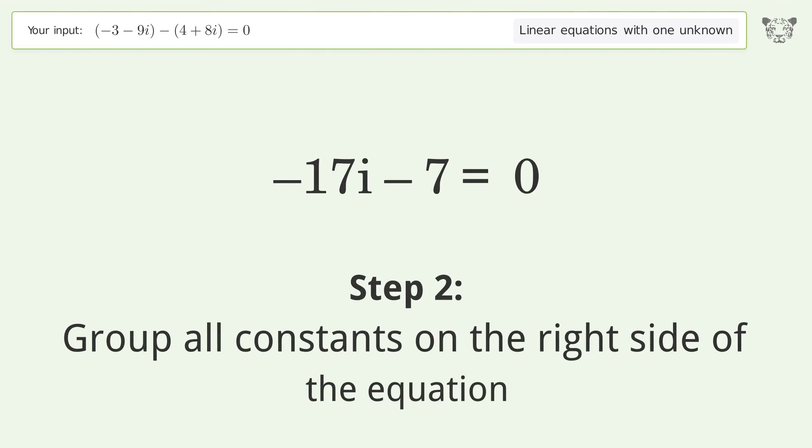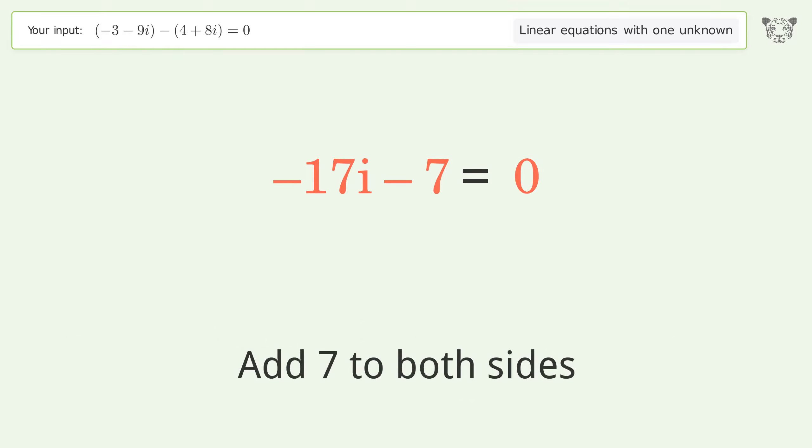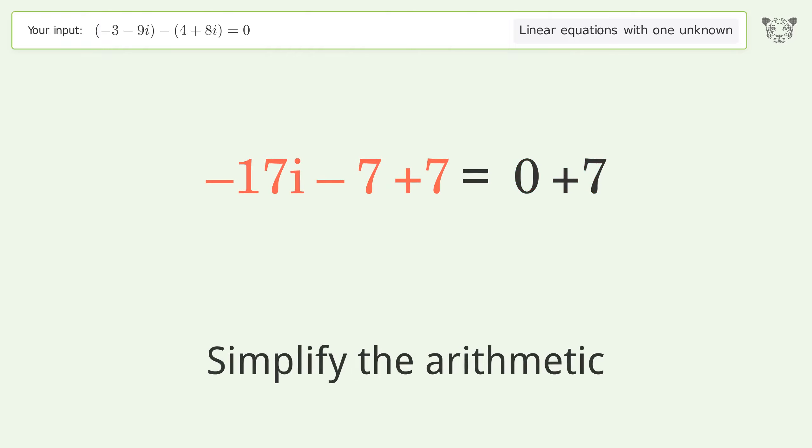Group all constants on the right side of the equation. Add 7 to both sides and simplify the arithmetic.